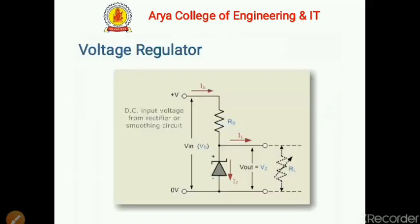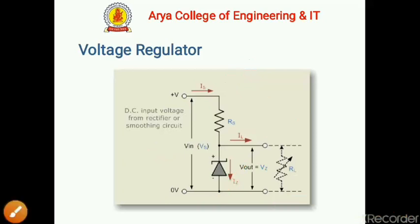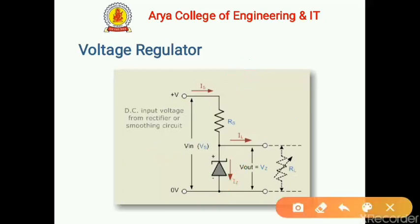The most popular application of the Zener diode is as a voltage regulator. In the voltage regulator circuit, there is an input voltage Vs, Is is the current from the source, Rs is the limiting resistor, IL is the current through the load, and IZ is the current through the Zener diode. Applying KCL at the node: Is = IZ + IL.